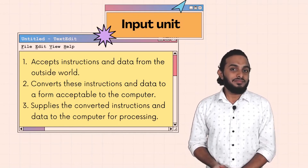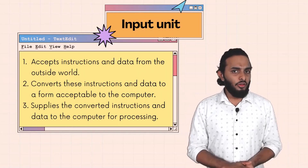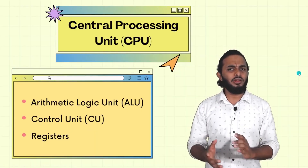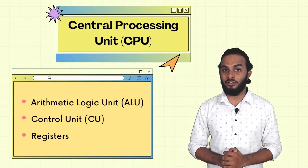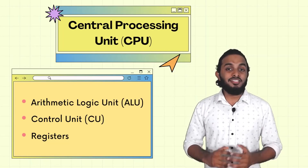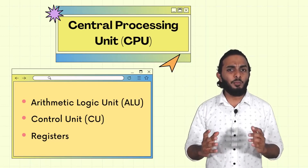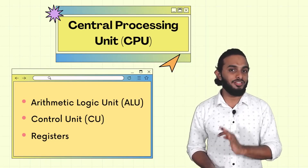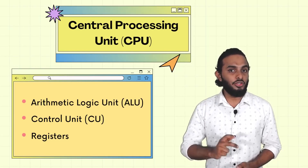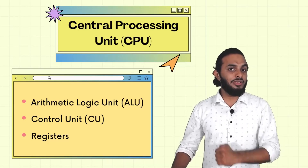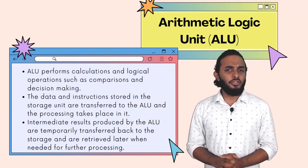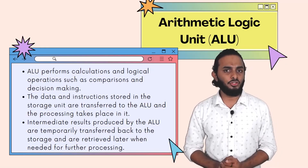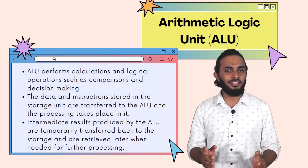There are three functions in the input unit: accept data, convert it to machine language, and supply it to the CPU. The CPU is the brain of the computer — the brain that controls the entire system. There are three units inside CPU: Control Unit, Arithmetic Logic Unit, and registers. ALU means it provides arithmetic operations — calculations, conversions, or comparisons.